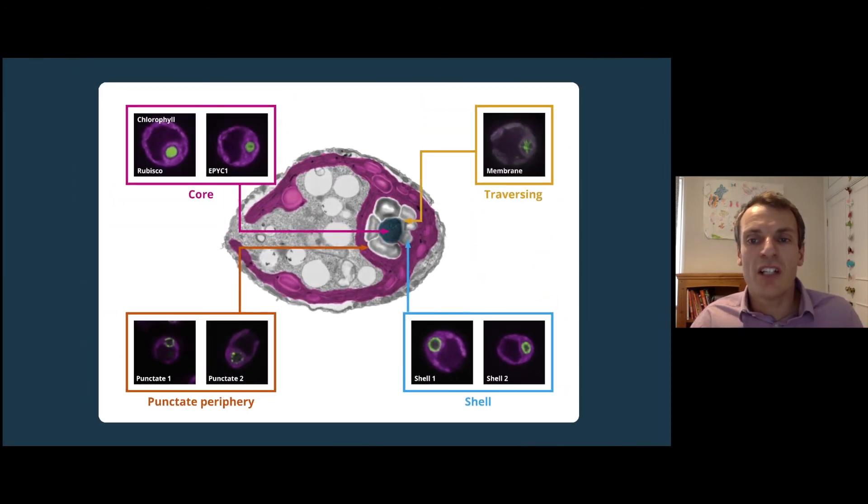To enable the assembly of a photosynthetic turbocharger in crops to boost yields, one of our main goals was to determine what proteins make up the pyrenoid. To do this, we fused a fluorescent protein to hundreds of candidate pyrenoid proteins and saw where they localized in the cell.